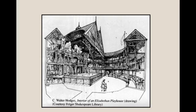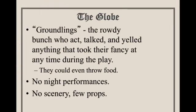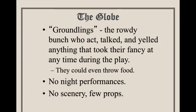We have a picture of what the Globe originally must have looked like. There is open air, because people would actually stand on the ground in front of the stage. There are also several tiered seatings along the side where people could pay a little bit more to have seating. The groundlings are the rowdy bunch who talked and yelled at anything that took their fancy, and would even throw food if they didn't like what they saw.